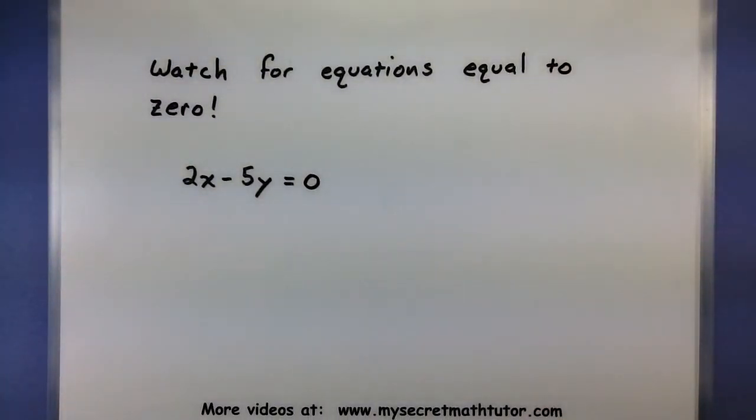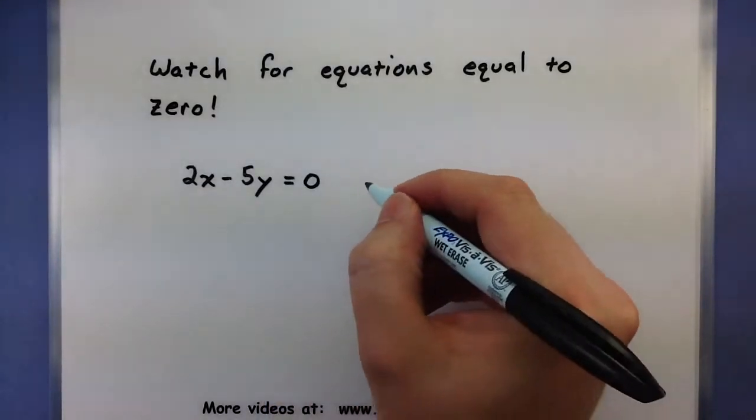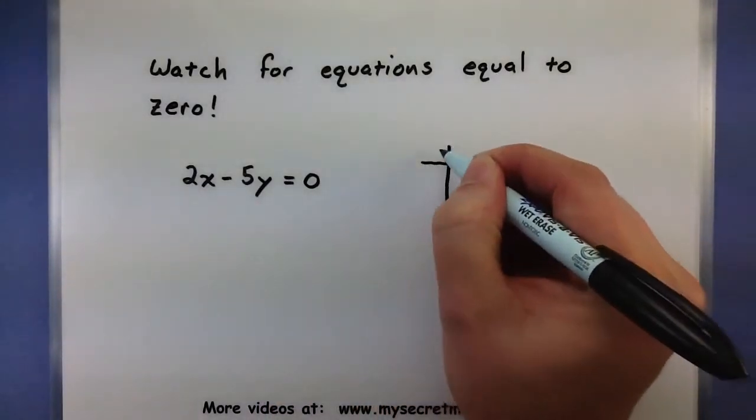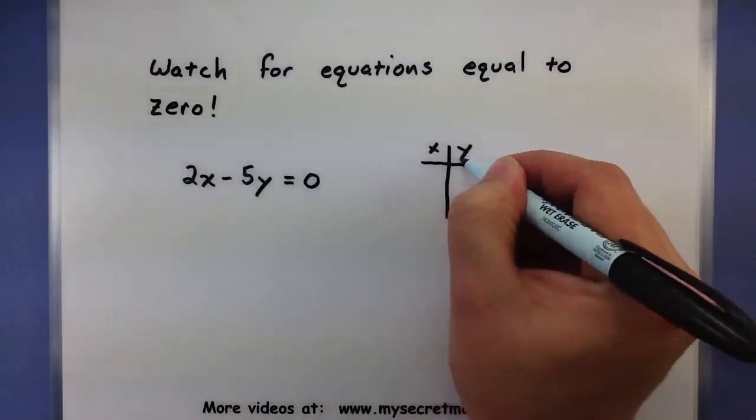Watch for your equation being set equal to 0. The reason why this causes a problem is your line will actually go through the origin. And when you try and set up this little table, you'll get the same point over and over.